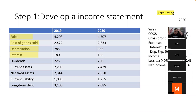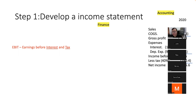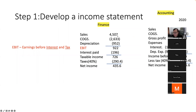In finance, we use the concept of EBIT — Earnings Before Interest and Tax — which is very different from accounting. The finance income statement format goes: Sales minus cost of goods sold minus depreciation equals EBIT. Then EBIT minus interest expense gives taxable income, and taxable income minus tax gives net income.